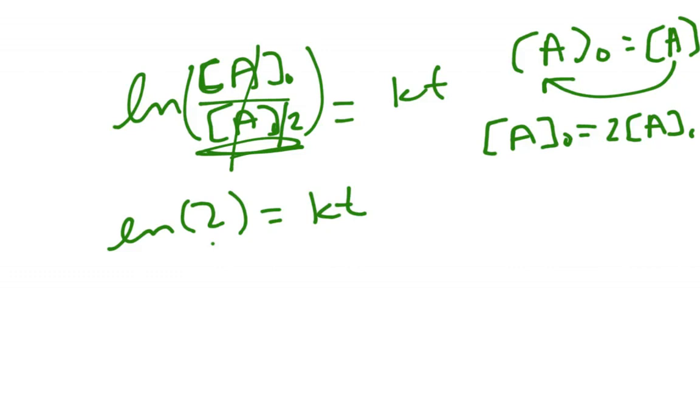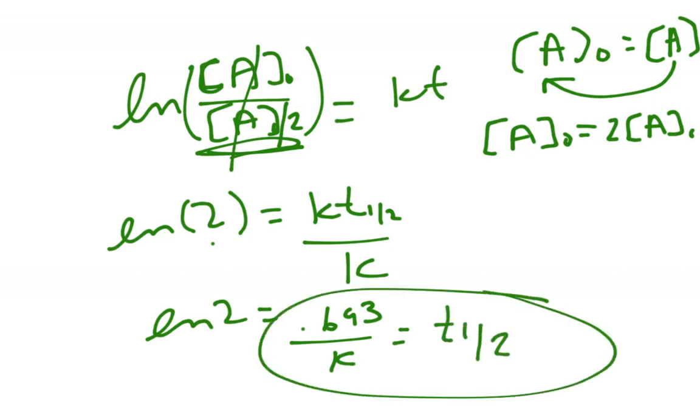Well, my time is what I kind of want to look for, and this is a time of a half-life. So I'm going to divide this by k, and I can go ln of 2, which equals 0.693, over k equals my half-life. So here, for a first-order equation, is how I would find out the half-life of that equation.